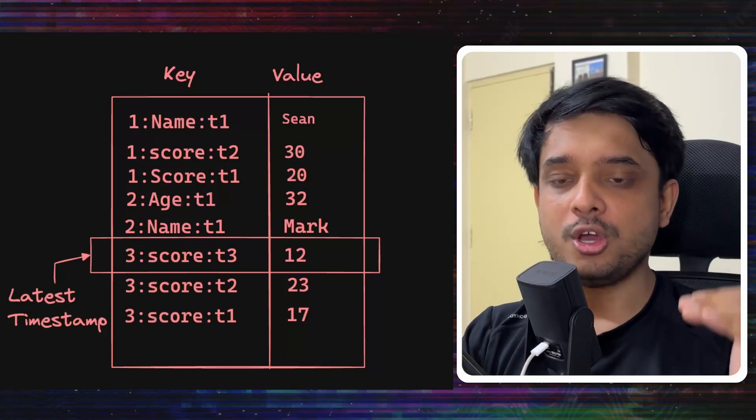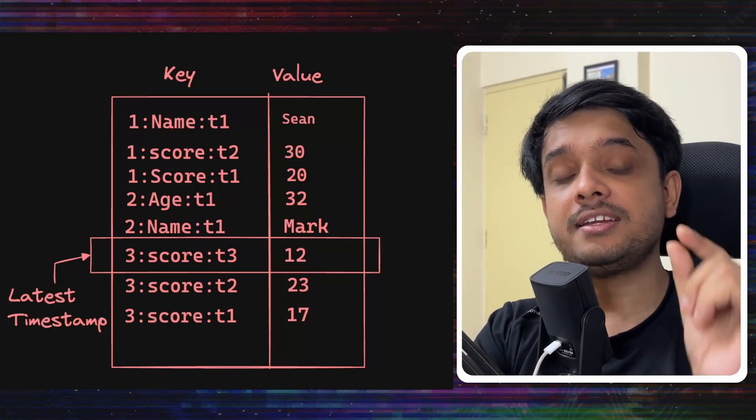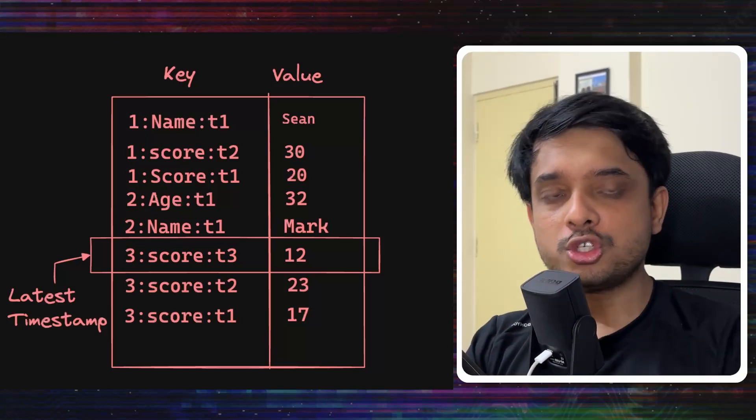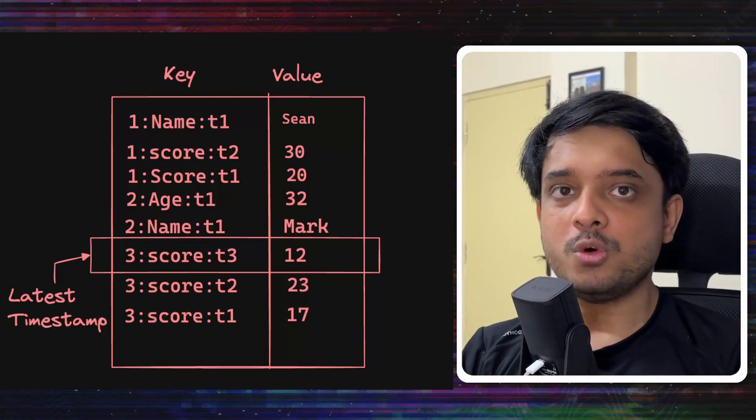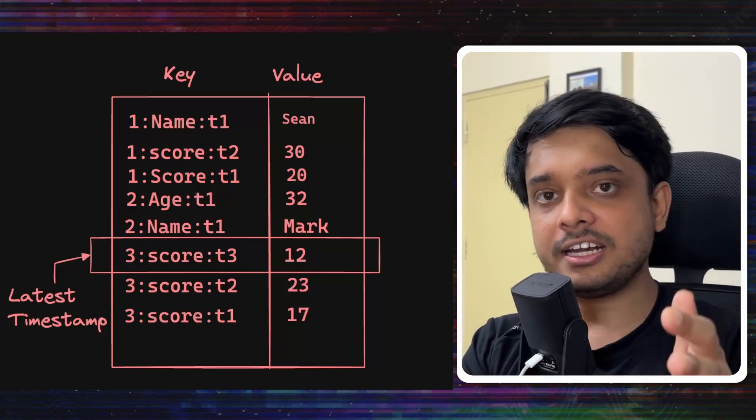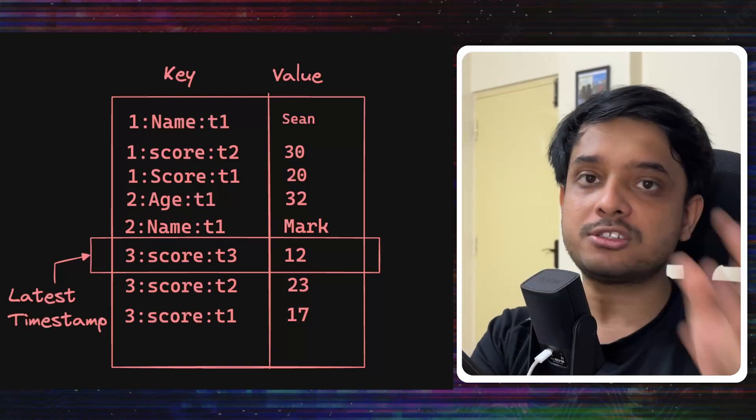Something needs to be done about it. We need the latest timestamp up top. So what Pinterest did was to create a custom comparator which would store the key in ascending order according to the rest of the key.